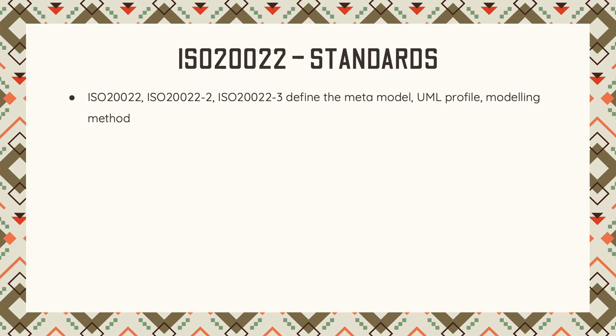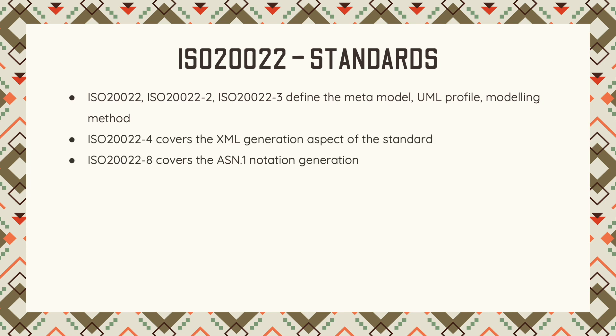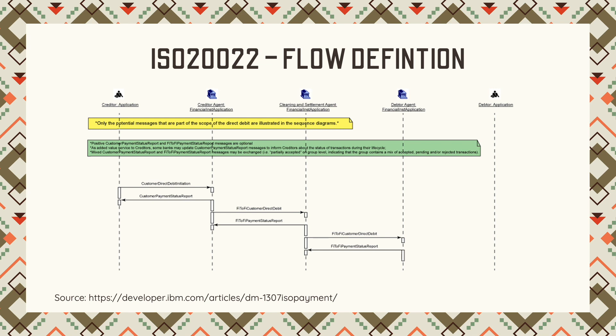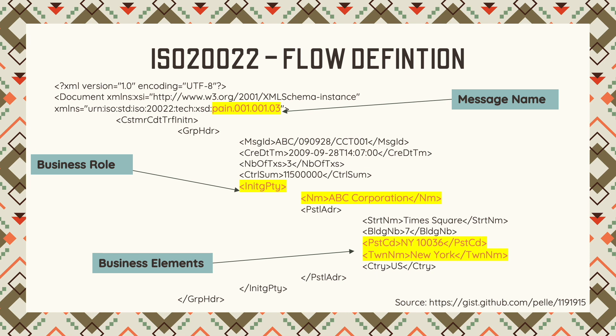This model forms a building block for ISO 20022, used to create the actual syntax in the end language required. The ISO 20022 standard has multiple parts. The first three define the meta model, the UML profile, etc. Part 4 covers the XML generation aspect. Part 8 covers the ASN.1 syntax aspect. A sample message flow for direct debit is shown, where multiple messages are exchanged between different parties. Here is a sample XML message for ISO 20022 for payments initiation. The message name, highlighted at the top, is PAIN — for payments initiation. You can see the various business actors, the initiating party, and business elements like postal code and town name. This illustrates how readable an ISO 20022 message is.